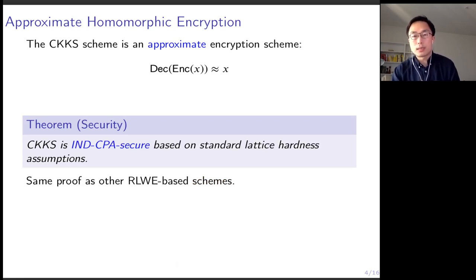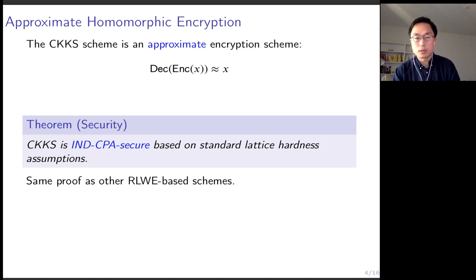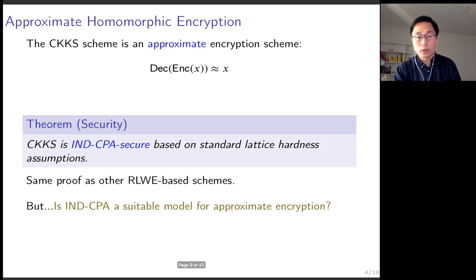For security, you can show that the CKKS scheme is IND-CPA secure based on standard lattice assumptions. The proof is essentially the same as other LWE-based schemes such as BGV and BFV. IND-CPA security is typically considered the standard security notion for passive security. So at this point, we may conclude that CKKS is passively secure — but we want to ask if that's really the case, or whether IND-CPA is a suitable model to consider for approximate encryptions.